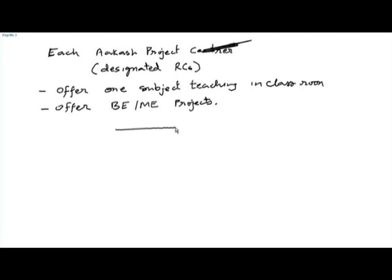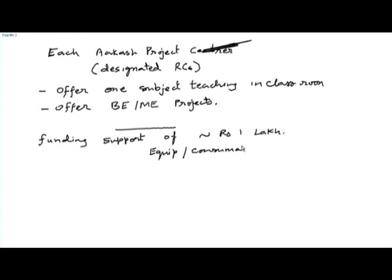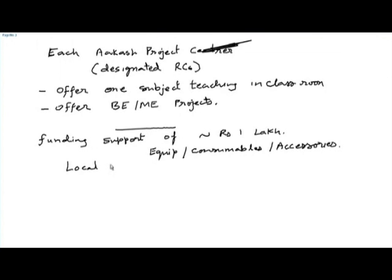Minimally, IIT Bombay will provide funding support of approximately rupees one lakh, primarily for equipment, consumables, accessories, etc. The participants will be glad to know that when the Aakash coordinators asked me what they are expected to do, for example, the quiz module required a local server plus Wi-Fi connections.